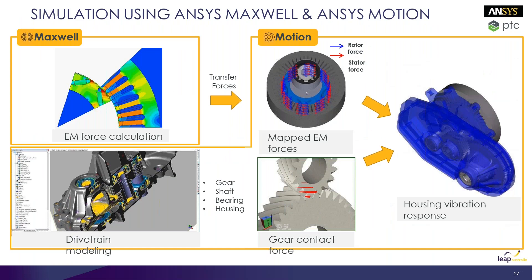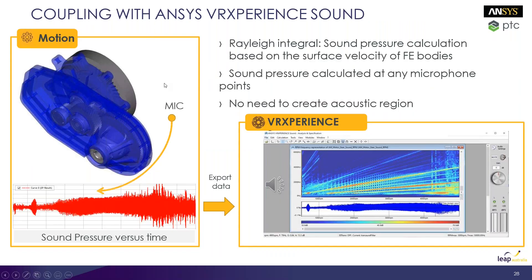For multi-physics analysis, you can now use different tools for noise and vibration analysis. For a motor design, you calculate the EM forces on the stator and rotor teeth, then map these forces in ANSYS Motion to determine what type of vibration the housing experiences. From there, sound pressure calculations can be performed in VR Experience, making this a full multi-physics workflow.